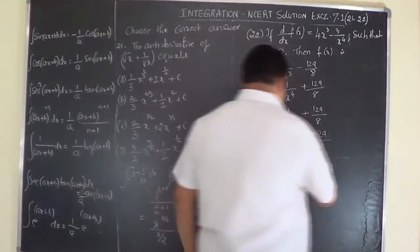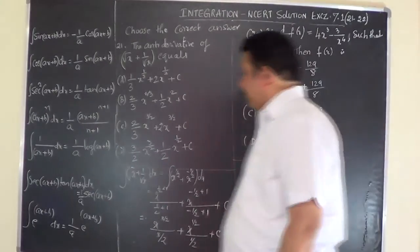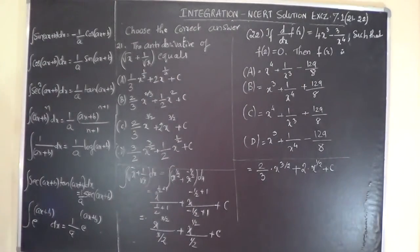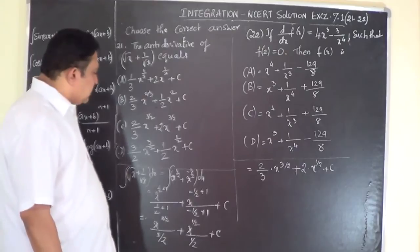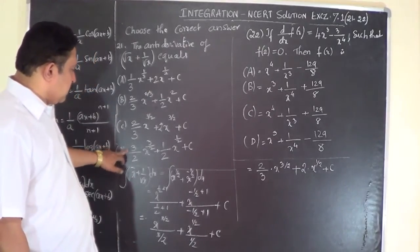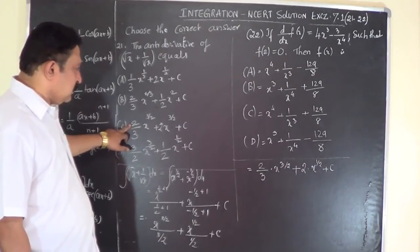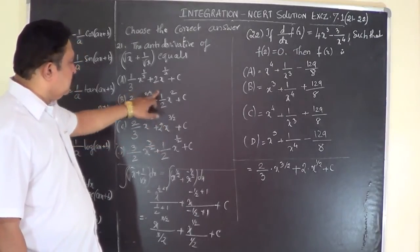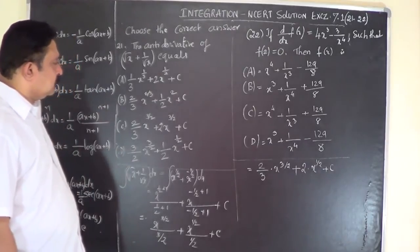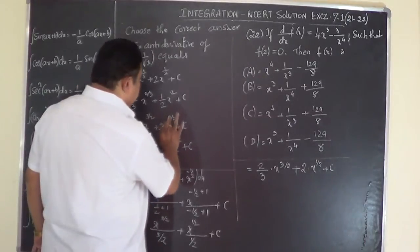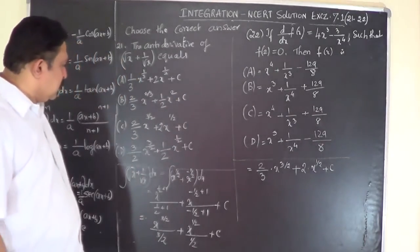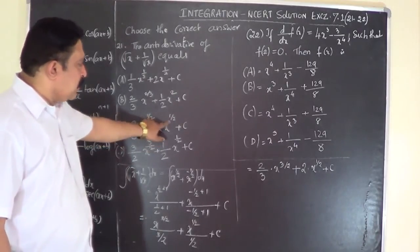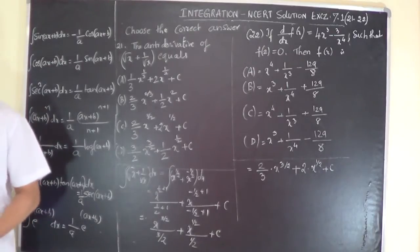Checking the options: we need (2/3)x^(3/2) + 2x^(1/2) + c. The second term must be x to the power of half, not 3/2. The matching option has (2/3)x^(3/2) + 2x^(1/2) + c, which is correct.